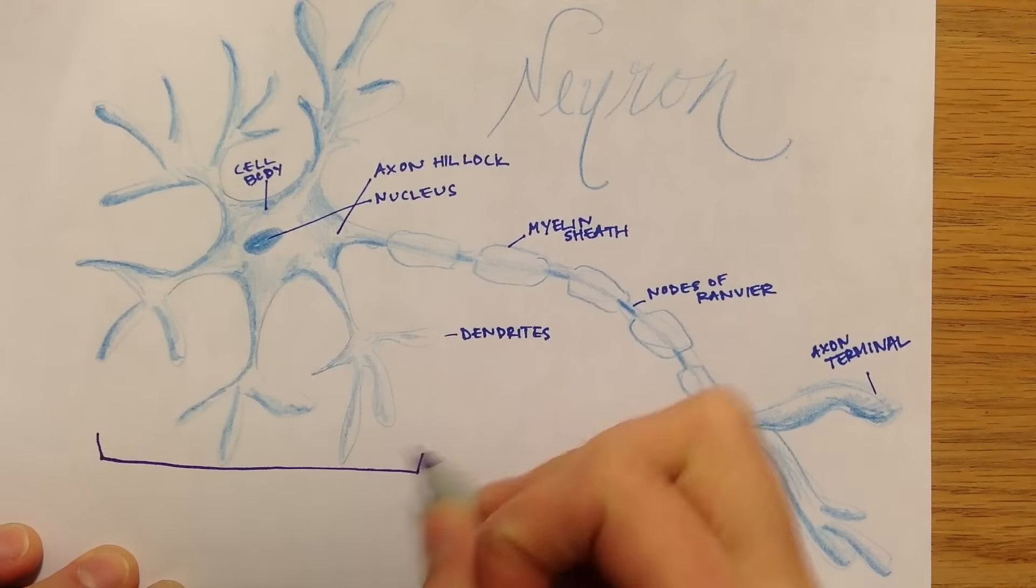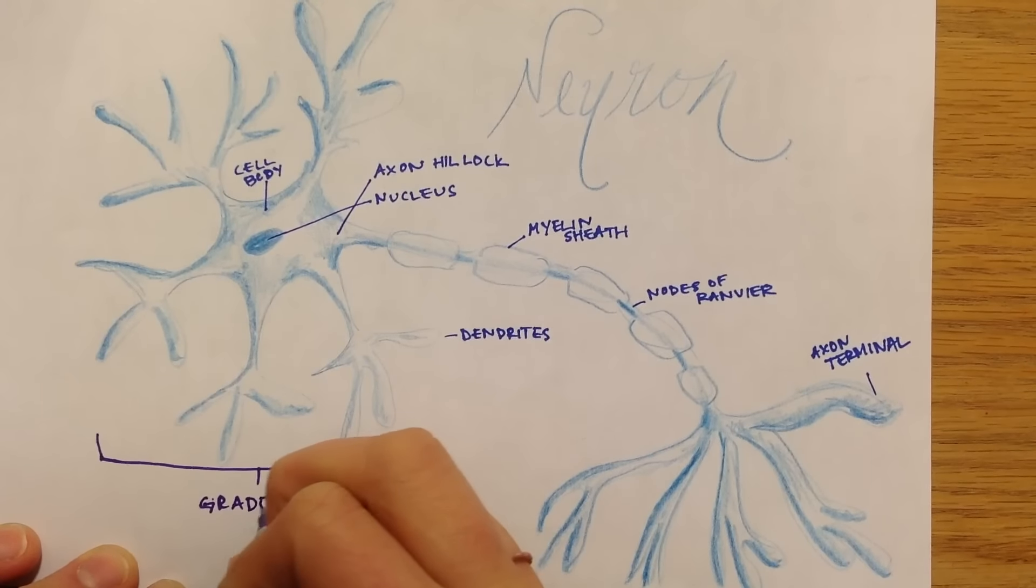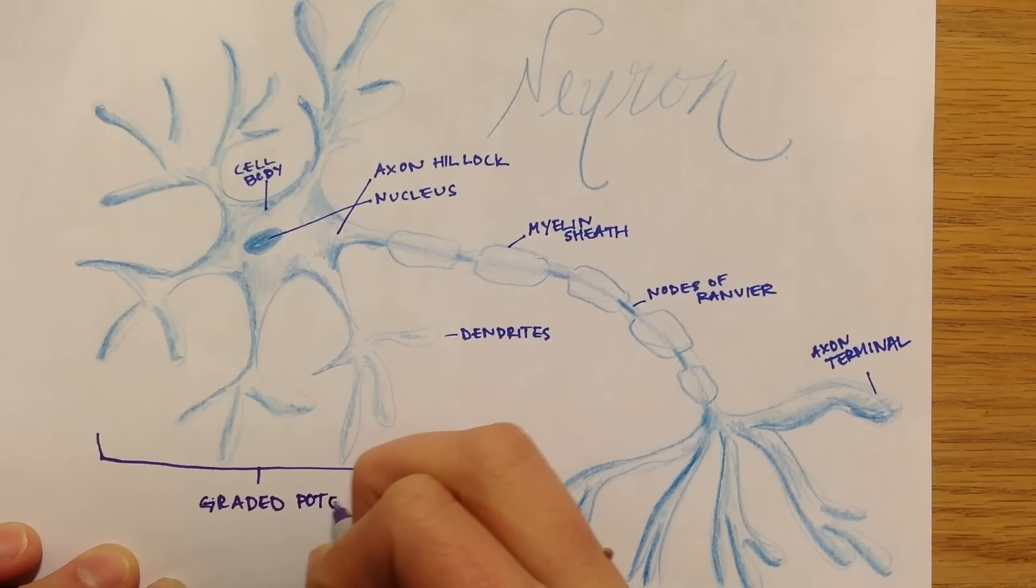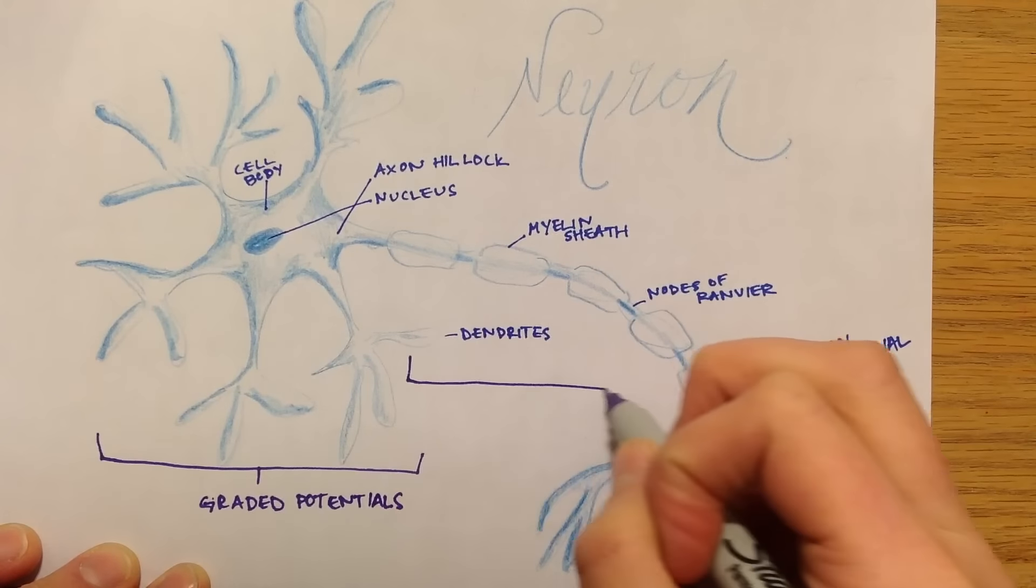In a neuron, graded potentials will occur in dendrites and the cell body, and then if the stimulus is great enough, action potentials will occur along the length of the axon.